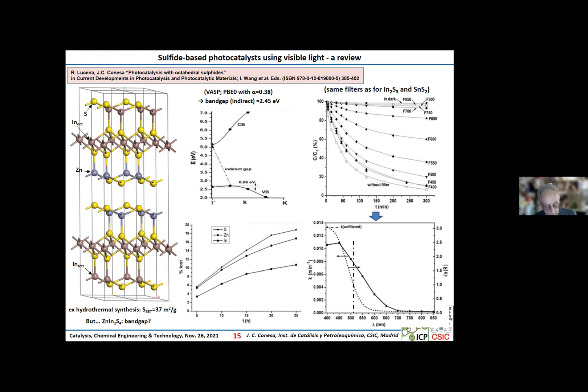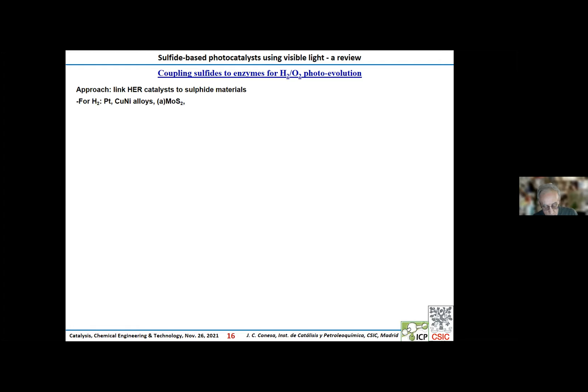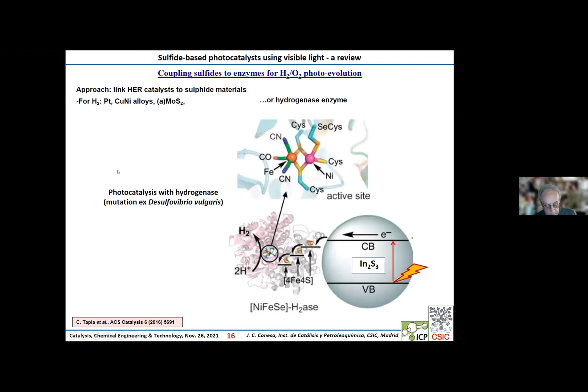Now we go into the main objective of this talk: how to combine enzymes with these sulfides in order to achieve water splitting. In principle, generating hydrogen can be achieved with several inorganic catalysts, but here we will use enzymes. In particular, for evolving hydrogen, we will use a mutated hydrogenase containing in the active site a bimetallic iron-nickel cluster. When combined with indium sulfide, electrons excited by visible light into the conduction band can cascade through three iron-sulfur clusters into the active site so as to generate hydrogen.